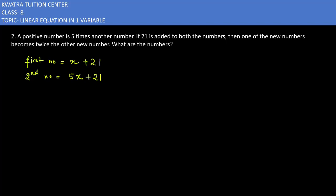Now you know that these two numbers can't be added. So x ko aap 21 se add nahi kar sakte because one is a number which has a variable in it, and the other one has a number in it. Right? So what you have to do here? In this case, the equation continues. Then one of the new numbers becomes twice the other new number. One of the number, meaning the first number, which is x plus 21.